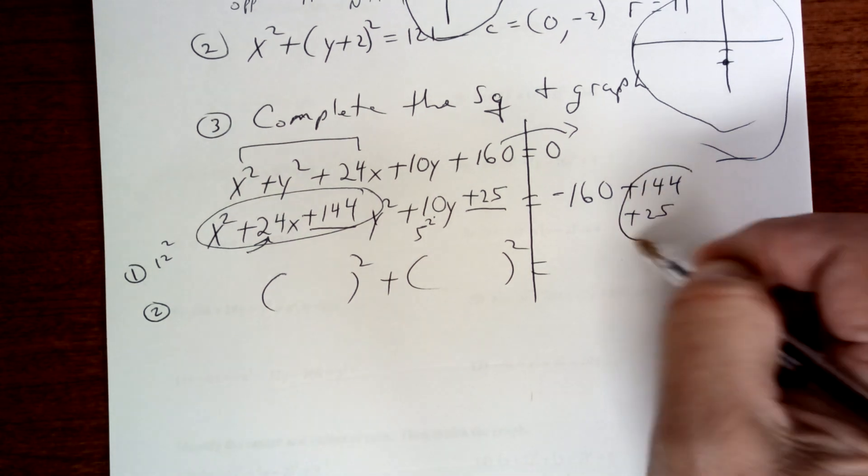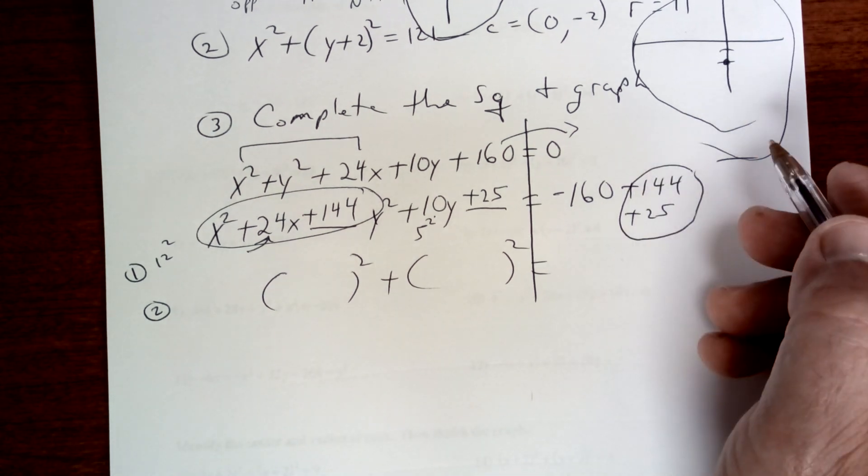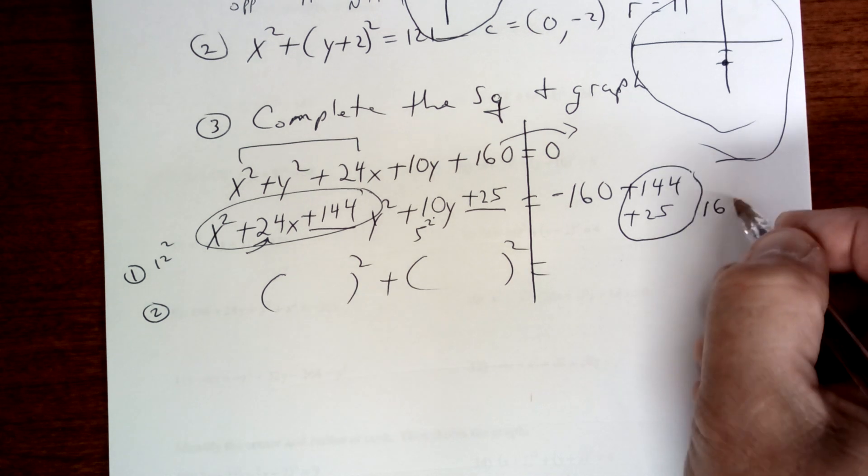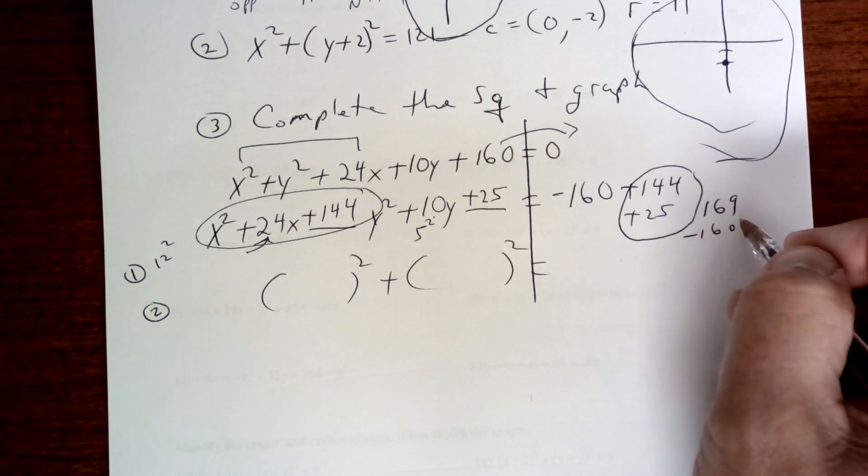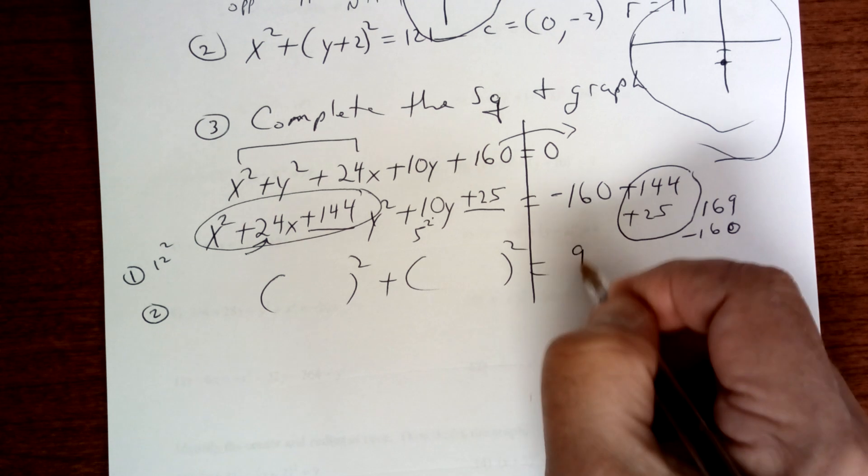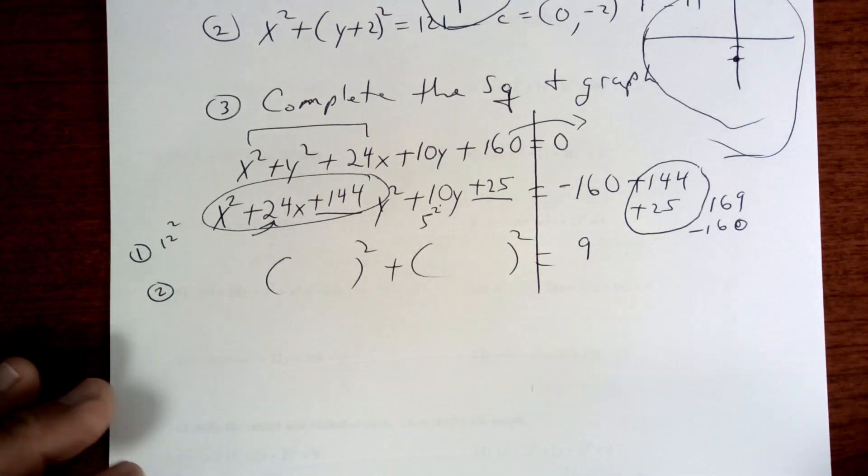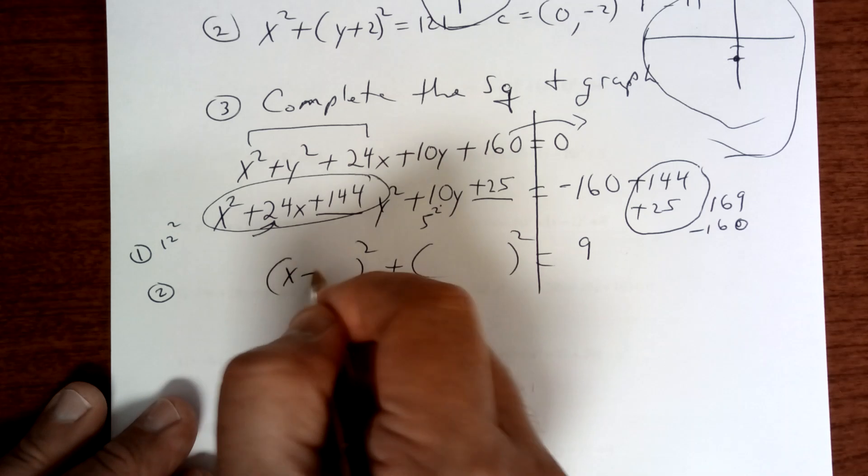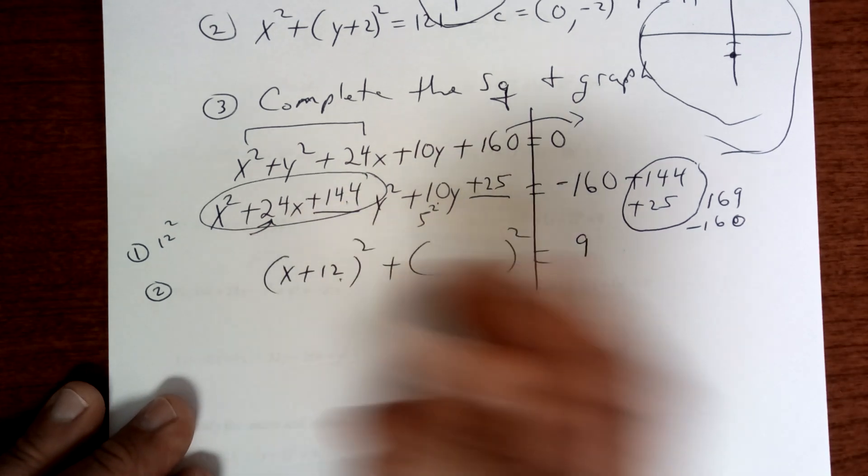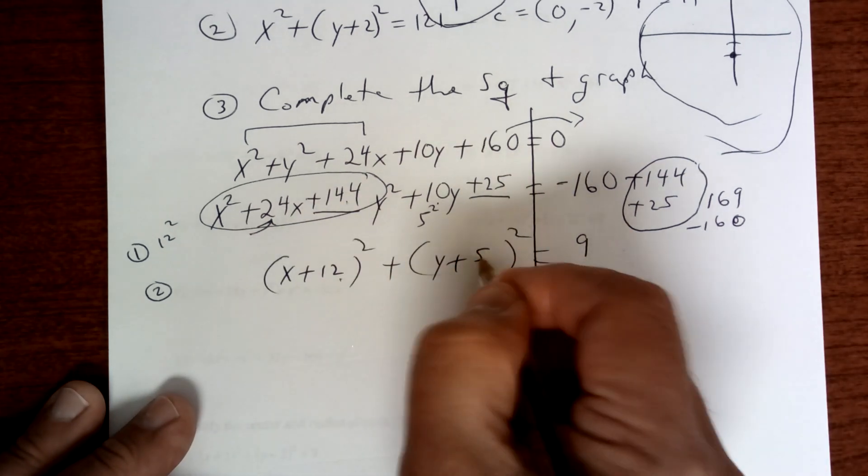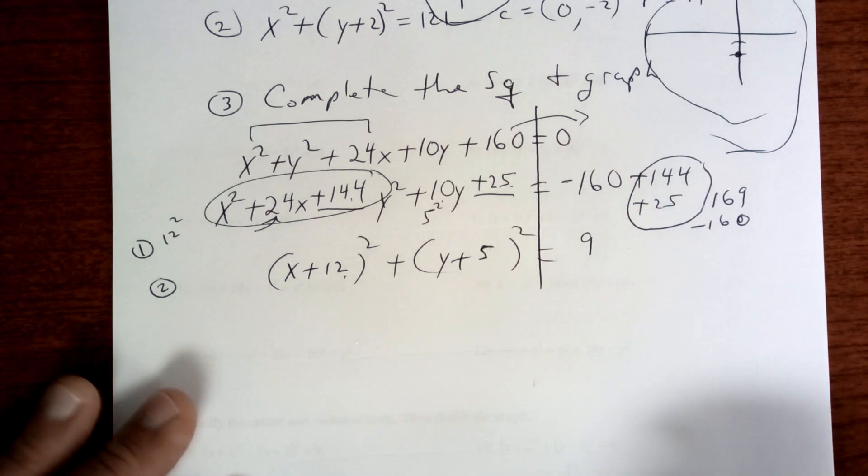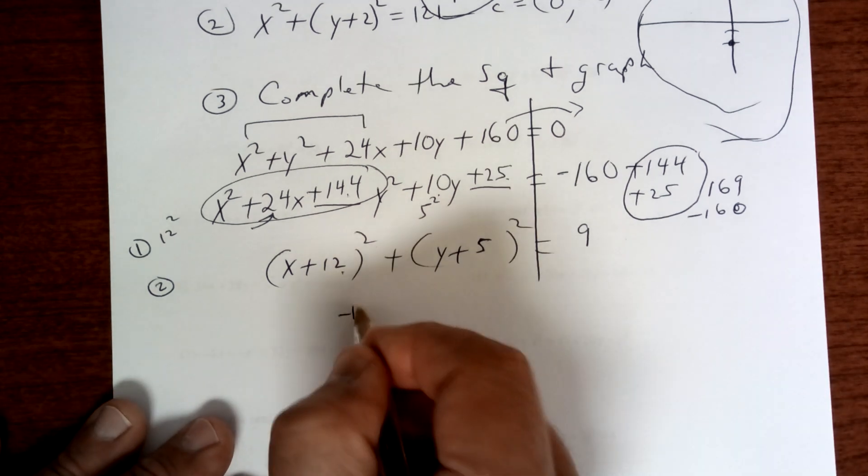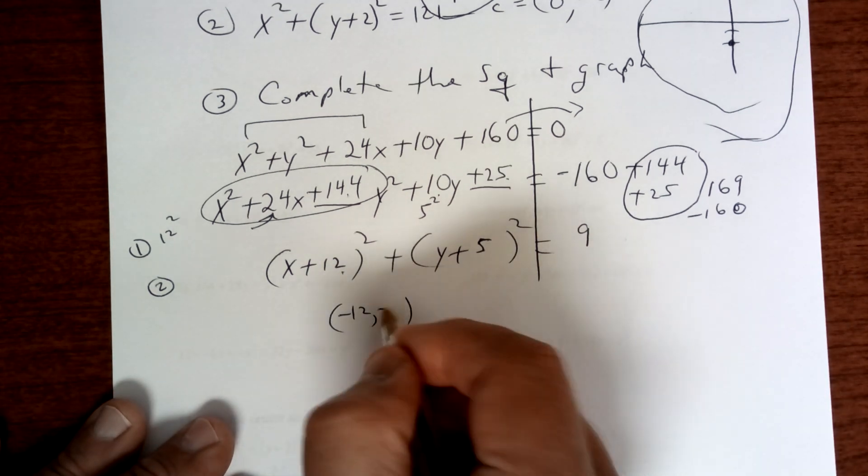Now this is 144 plus 25 is 169. Let me think a minute. When you add this up, I get 169 minus 160, I guess that's going to give me 9. Okay, do the math, check it on your calculator. This right here is going to be (x + 12), 12 times 12. This is going to be (y + 5), 5 times 5.